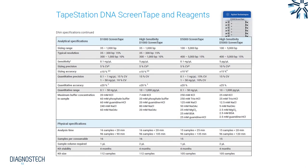When deciding which ScreenTape kit is most suitable, there are several things to consider. The most important is the size range — what size fragments are you expecting to measure? If you have fragments larger than 1,000 bp, such as large NGS libraries or DNA smears, you would need the DNA 5000 which allows a larger sizing range. You also need to consider the sensitivity, quantitative range, quantitative accuracy, and maximum salt buffer concentrations present in your sample. Physical specifications such as sample volume required and the number of samples per kit are also important to take note of.